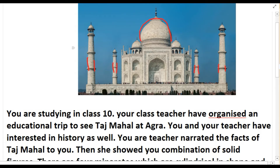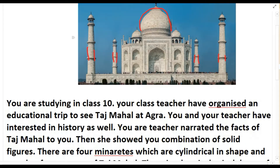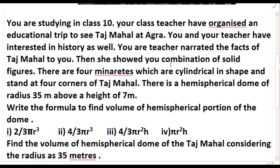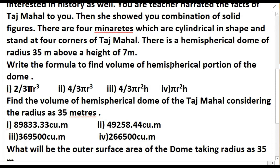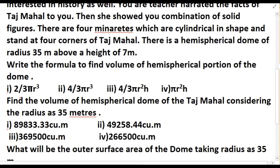There are five sub-questions, each of multiple choice type, and you need to attempt any four. The first question: write the formula to find the volume of the hemispherical portion of the dome. We know the formula to find the volume of a hemisphere is (2/3)πr³. Now the second question: find the volume of the hemispherical dome of the Taj Mahal, considering the radius as 35 meters.